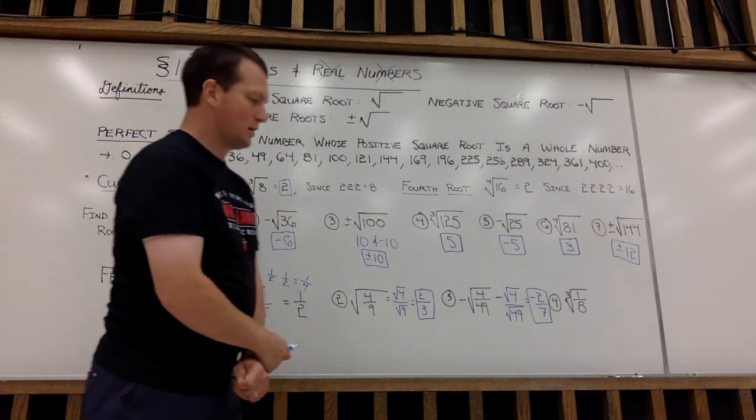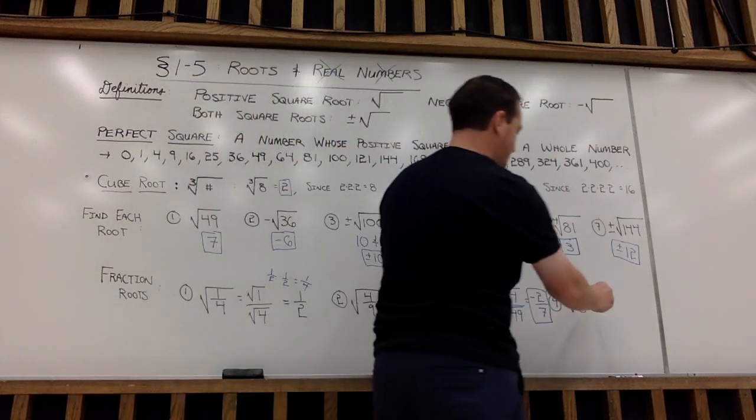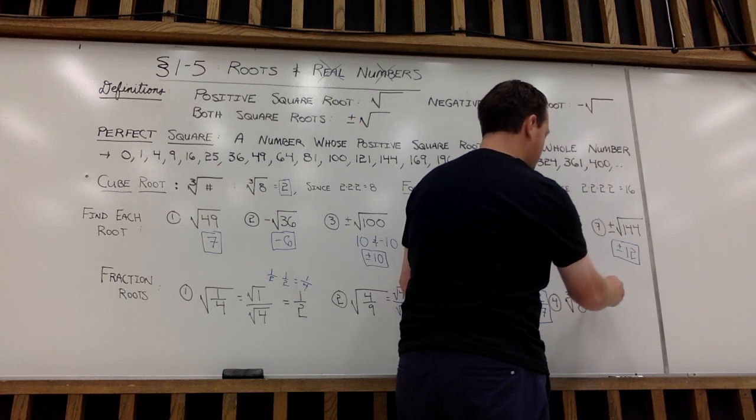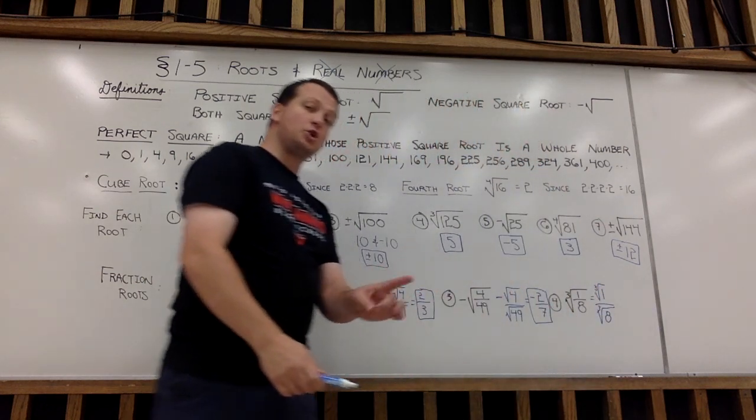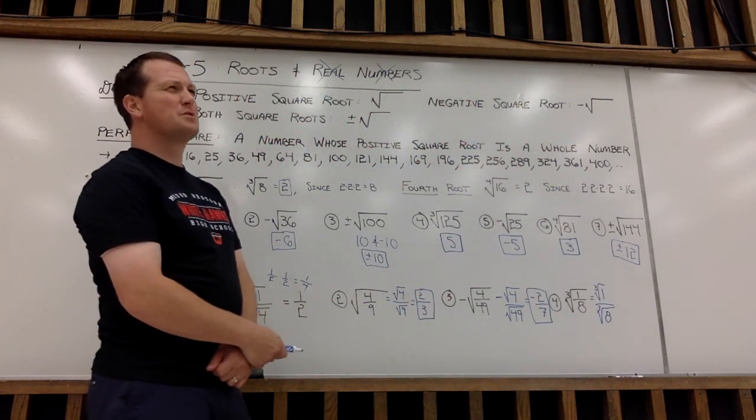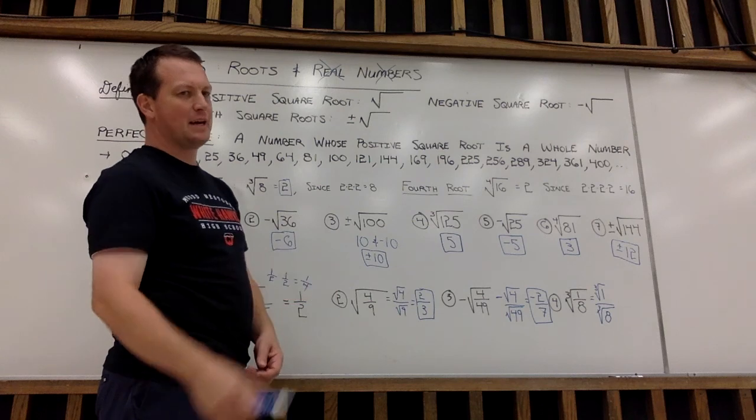And then lastly, cube root. Ooh, look out. Cube root of 1/8. I want to first take the cube root of 1. Well, what number times itself 3 times is 1? Yeah, that's right. 1. 1 times 1 times 1 is 1.